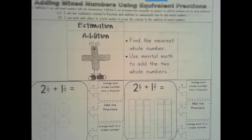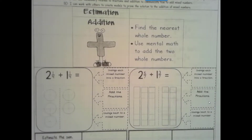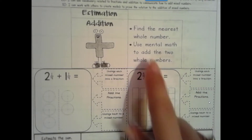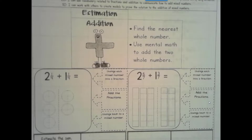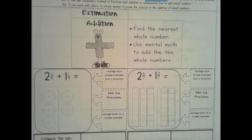First we're going to look at estimation with addition. It's different but similar to our estimation with whole numbers. Instead of rounding to a round number, we're going to go to the nearest whole number and then use mental math to add the two whole numbers. We're going back to benchmark fractions: if something's more than half, we go to the next number; if it's exactly half, we go to the next whole number; if it's less than half, we go down to the nearest whole number.